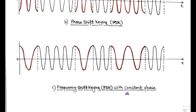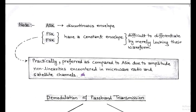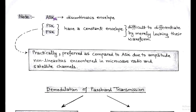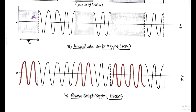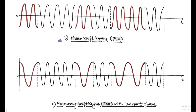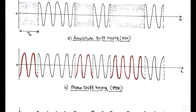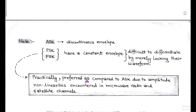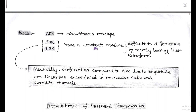After observing the waveforms of ASK, PSK, and FSK, we conclude that ASK has a discontinuous envelope due to the absence of amplitude for one of the symbols. In the case of PSK and FSK, there is a constant envelope, and they are preferred practically compared to ASK because ASK has non-linearity in amplitude in the case of microwave, radio, or satellite channels. Also, PSK and FSK cannot be differentiated easily by merely looking at their waveforms.